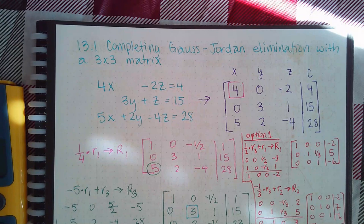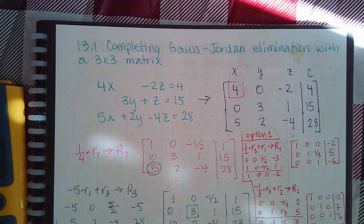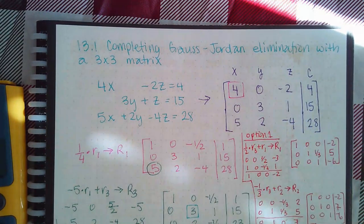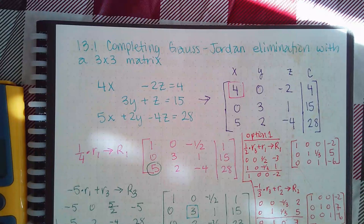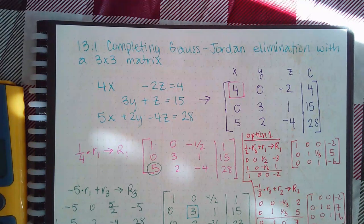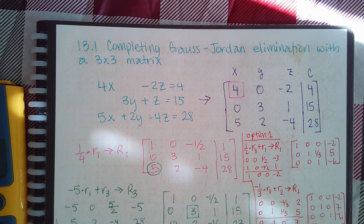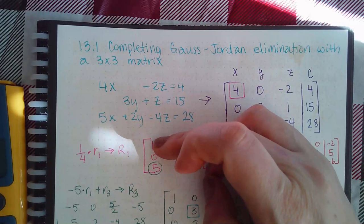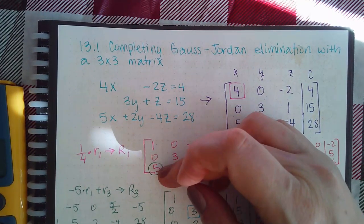Now we're going to go through the process of solving the system. The first step is to always get a one in the boxed position. To do that, we multiply by the reciprocal — the reciprocal of four is one over four. So I did one over four times row one, meaning each entry multiplied by one-fourth, to yield the new first row.